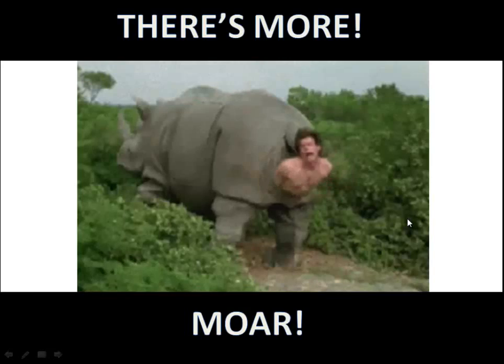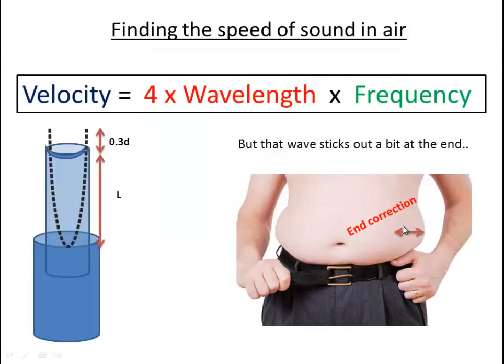It's kind of complicated, but wait, there's even more. There's also this end correction thing, which is a little effect we get because, as I said, the antinode is not exactly at the top. It's slightly sticking out of it. So it makes the equation a little bit more complicated. We've got to add 0.3 of the diameter to the length.